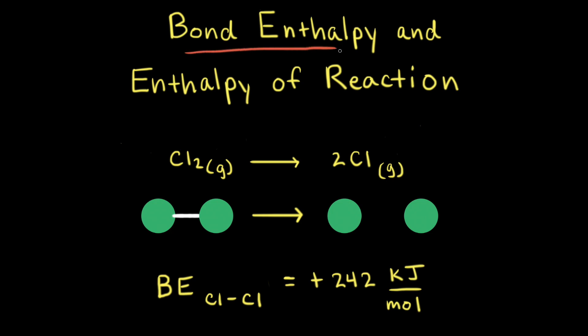Bond enthalpy is the change in enthalpy, or delta H, for breaking a particular bond in one mole of a gaseous substance. If we think about the diatomic chlorine molecule, Cl2 — each of the green spheres is a chlorine atom bonded together by a single covalent bond. It would take energy to break this bond in diatomic chlorine gas and turn Cl2 into two individual chlorine atoms, going from Cl2 in the gaseous state to 2Cl.